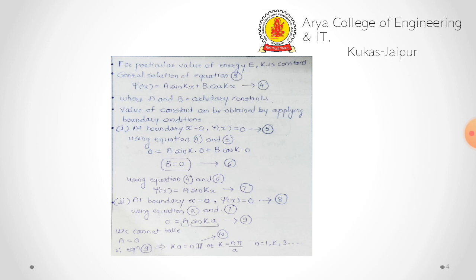Applying the first boundary condition: at x = 0, ψ(x) = 0. Putting this into the general equation: 0 = A sin(k·0) + B cos(k·0), which gives B = 0. So we successfully find that the arbitrary constant B is equal to 0.